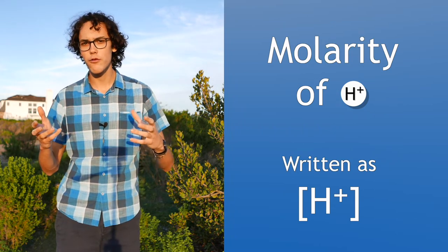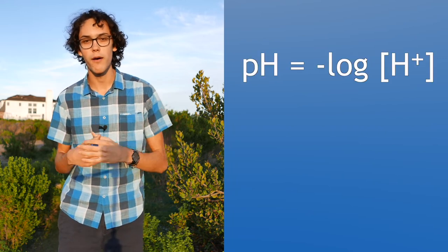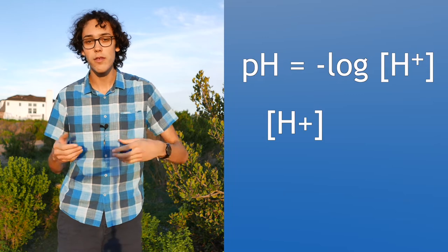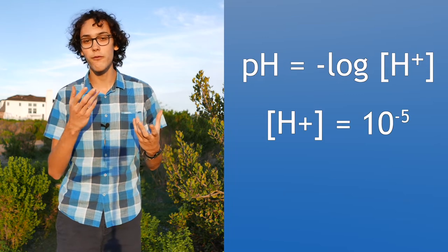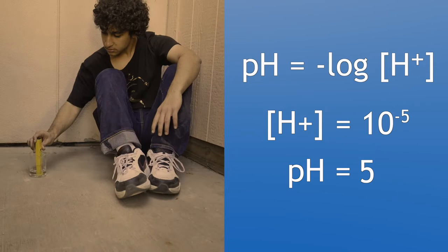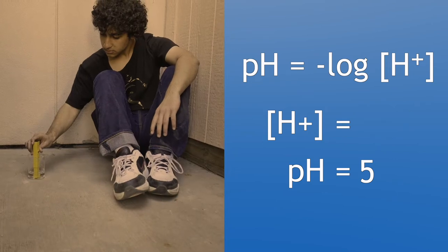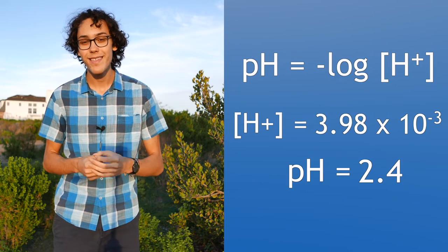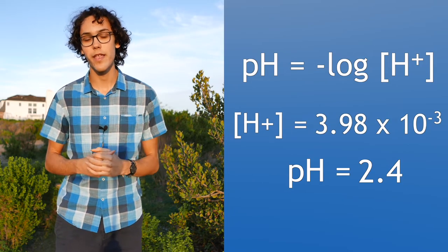Because the molarity of hydrogen can vary so much between different acids and bases, we use the negative logarithm of that scale. So if the molarity of the hydrogen is 10 to the negative 5, the pH is 5. You measure the pH of this unknown acid to be 2.4, so the molarity of the hydrogen is 10 to the negative 2.4, or about 3.98 times 10 to the negative 3.